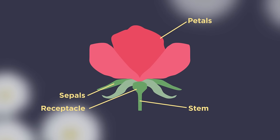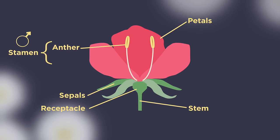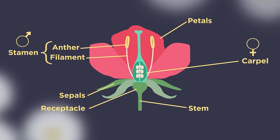The stamen is the male part of the flower. It consists of an anther, where pollen is produced, and the filament, which is the stalk that supports the anther. These structures are responsible for the production and the positioning of pollen — the male gametes.